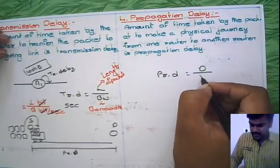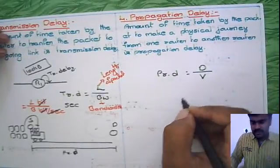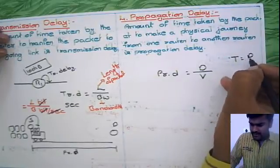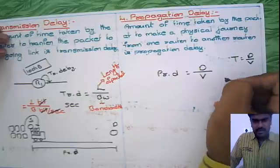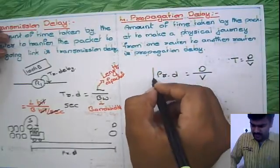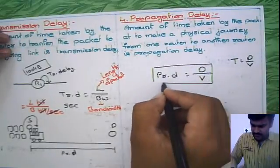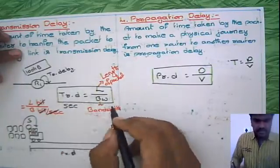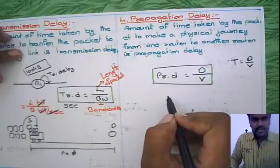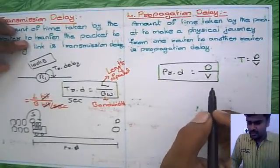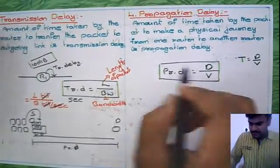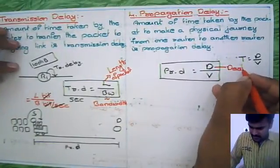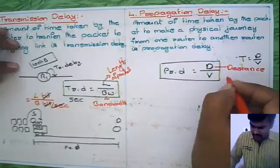As we know, time equals distance by velocity, distance by speed. Same formula here we are using, and this is one of the formulas we very frequently use in the entire course. So we are saying distance and we are saying velocity. This is about propagation delay.